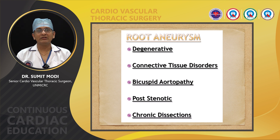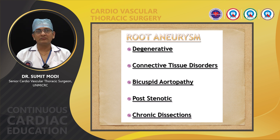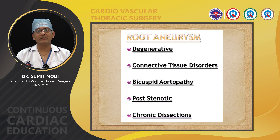After learning the anatomy and morphology of the aortic valve, we will now learn about the pathology and pathological diseases. The most common causes of aortic aneurysms include degenerative disease, connective tissue disorders like Marfan syndrome and Ehlers-Danlos syndrome, and bicuspid aortic valve — a congenital aortic valve anomaly where only two aortic cusps are present, which is associated with connective tissue disorder of the aortic wall.